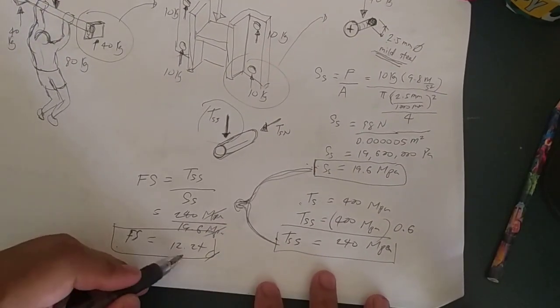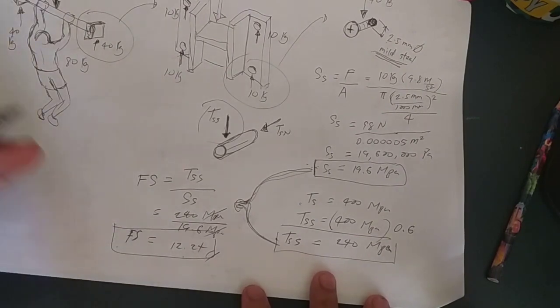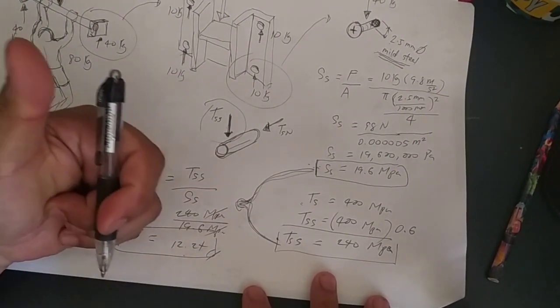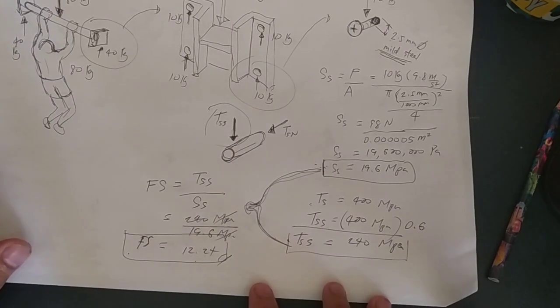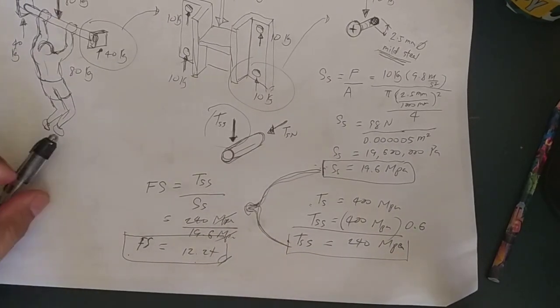But since our factor of safety is 12.24, which is more than six, then that means we are good to go. Given this simple calculation, we can now proceed with our fabrication.